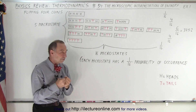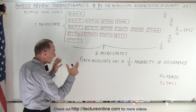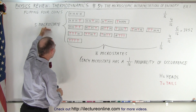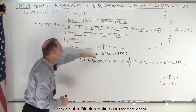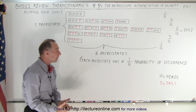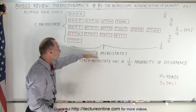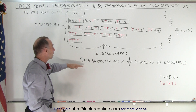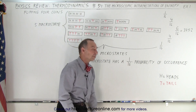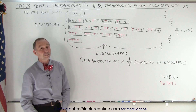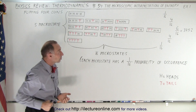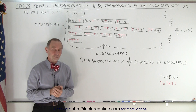So that gives you a better feel, at least from a perspective here, that we have macro states which contain individual micro states. The total number of possibilities is all the micro states put together, and therefore each micro state in this case has a 1 in 16 probability of occurrence. So that is the concept of the microscopic interpretation of entropy.